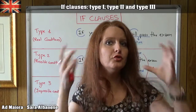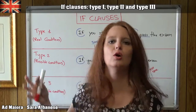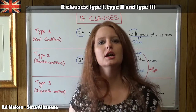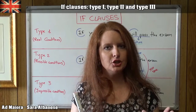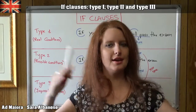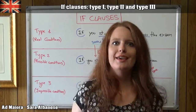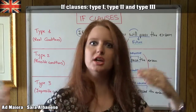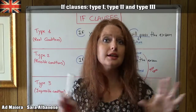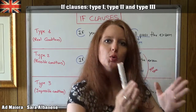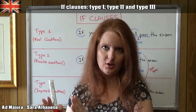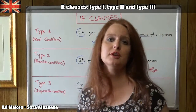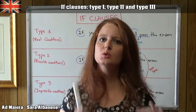The tenses we're going to use for each one of these types are absolutely very rigid in English. We can't choose one tense or another. In other languages, for example in Italian, for Type 1 we can choose different tenses. In English, we can't. We have those specific tenses, and those tenses change from one type to the other in a very regular way.